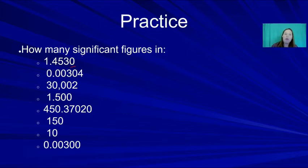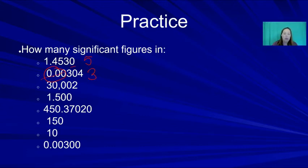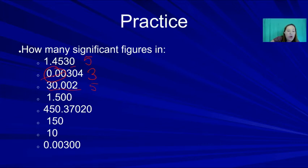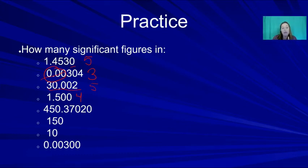Practice: 1.4530 — the trailing zero is to the right of a decimal after significant digits, so it's significant: 5 significant digits. 0.00304 — leading zeros are placeholders, but the captive zero counts: 3 significant digits. 30,002 — the 3 and 2 hold three captive zeros: 5 significant digits. 2.200 — two trailing zeros right of decimal: 4 significant figures.